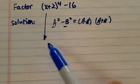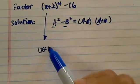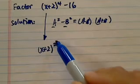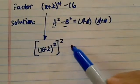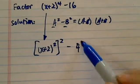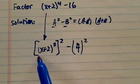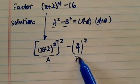So what we're going to do is we're going to force it into this form. x plus 2 to the 4th is really x plus 2 squared, squared again. Minus 16 is really 4 squared. So here is the a term, here is our b term.